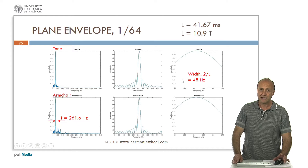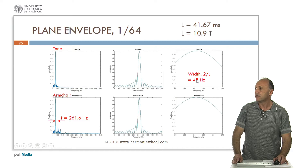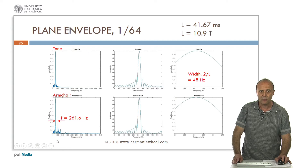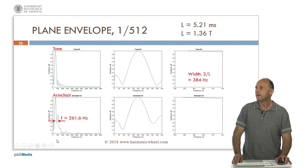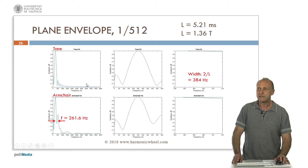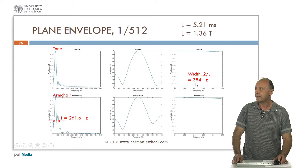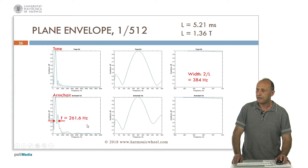Let's divide again the length of the sound by 8. Now the width of the line is 48 Hertz, and here in the case of the armchair we can appreciate an overlap. And let's divide again by 8 the length of the sound. Now the width of the line is near 400 Hertz, and in the case of the armchair we have a full overlap.